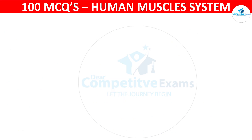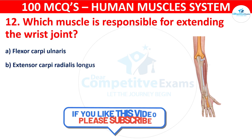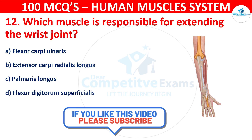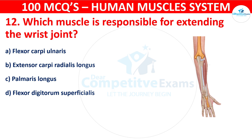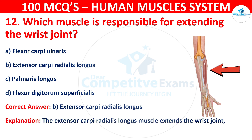Question number twelve: Which muscle is responsible for extending the wrist joint? Your options are: Flexor carpi ulnaris, Extensor carpi radialis longus, Palmaris longus, or Flexor digitorum superficialis. The correct answer is B, that is extensor carpi radialis longus. The extensor carpi radialis longus muscle extends the wrist joint, allowing for movements like wrist extension.